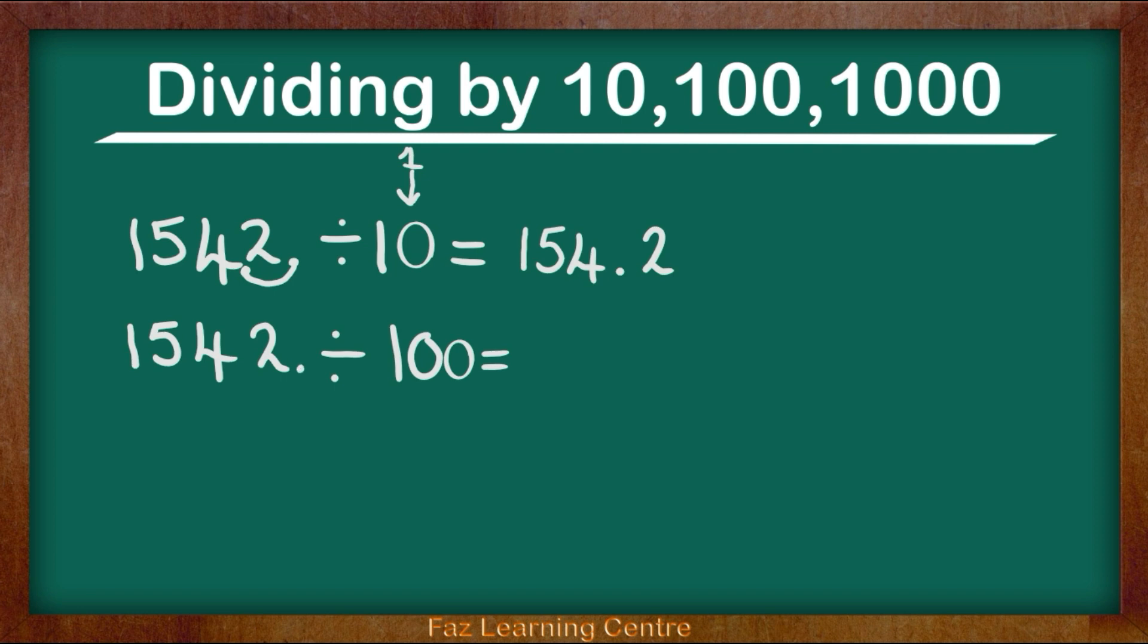Now we are going to move to the left. But how many times do we need to move to the left? Depends on the zeros. How many zeros do we have? 1, 2. So that means we are moving backwards. We are moving to the left 2 times.